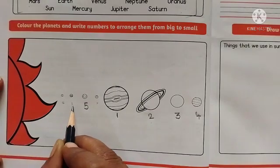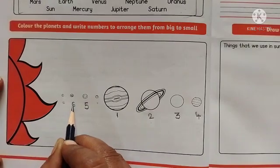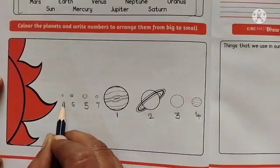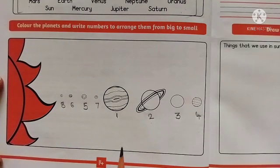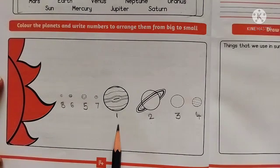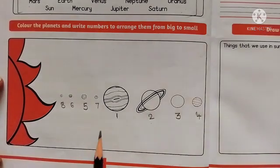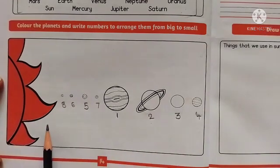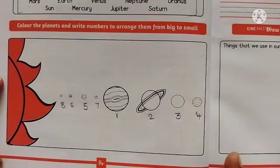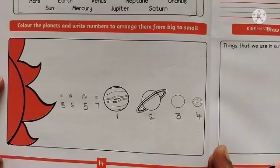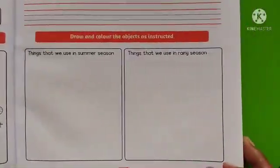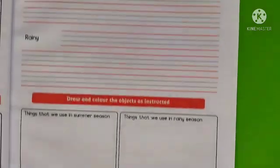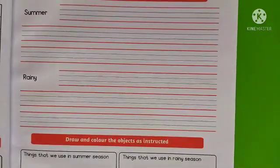Six, seven, and eight. We have arranged them according to their size. After completing the numbering work, you have to color the given planets. Then let us move on to page number fifteen, where we have an activity.